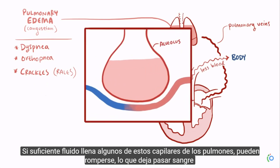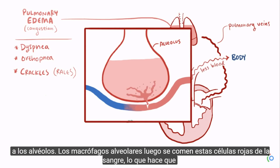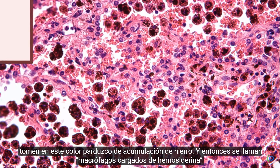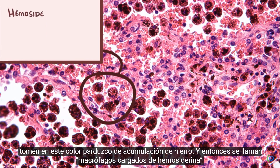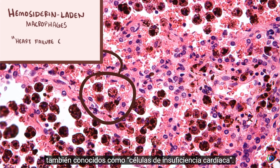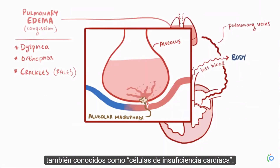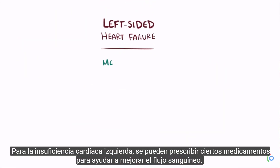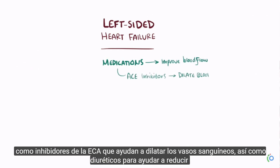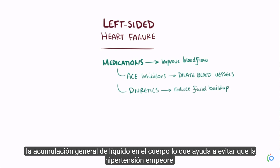If enough fluid fills the capillaries in the lungs, they can rupture and leak blood into the alveoli. Alveolar macrophages eat up these red blood cells, taking on a brownish color from iron buildup, and are then called hemosiderin-laden macrophages, also known as heart failure cells. For left-sided heart failure, medications like ACE inhibitors can help dilate blood vessels, and diuretics help reduce fluid buildup in the body, preventing hypertension from worsening the heart failure.